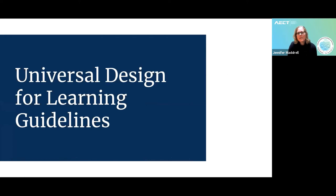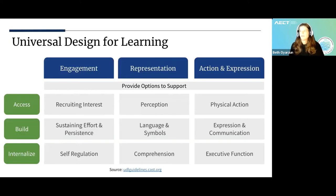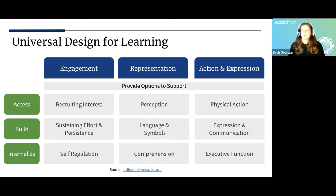That takes us through some helper things for Universal Design for Learning. The UDL guidelines themselves suggest that you have multiple means of engagement, multiple means of representation, and multiple means of action and expression in order for learners to interact with the content and each other. Those are the three guiding principles, and then there are nine different guidelines — it's a robust framework that can be overwhelming if you're new to it.